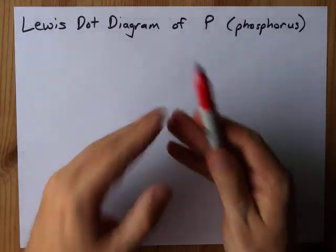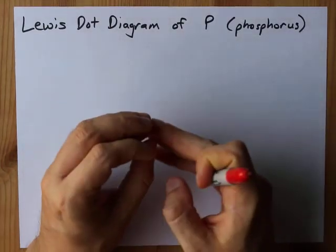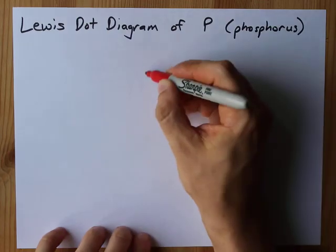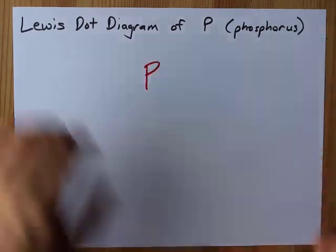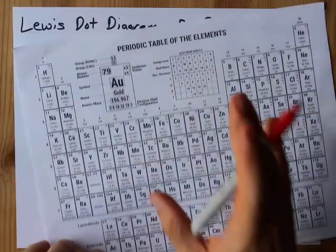Phosphorus the element as a single atom is super easy. All you have to do is write the symbol down, P, and then draw the valence electrons around it.